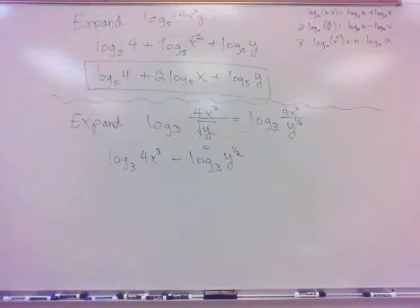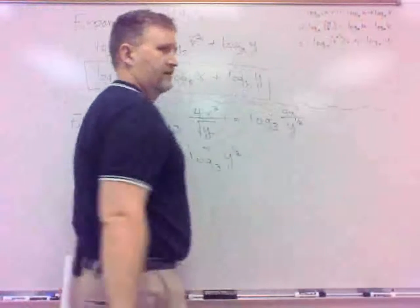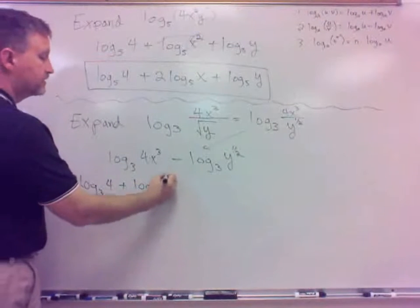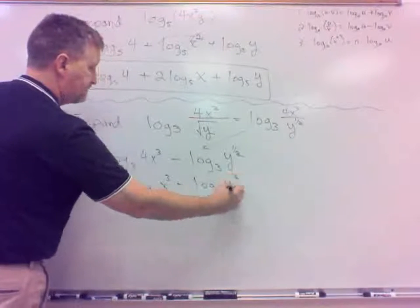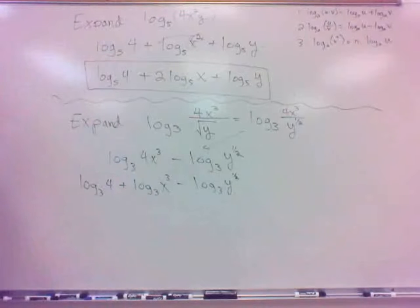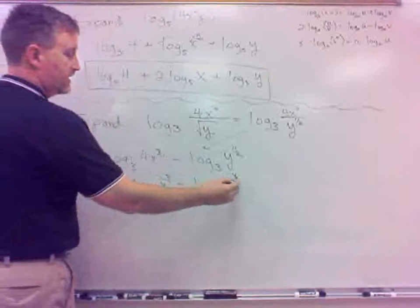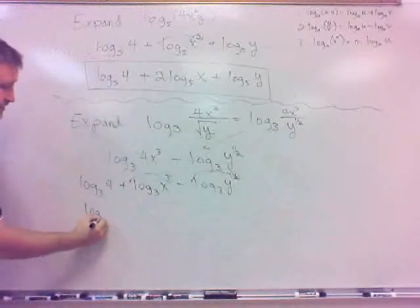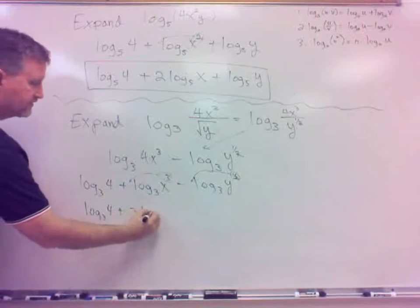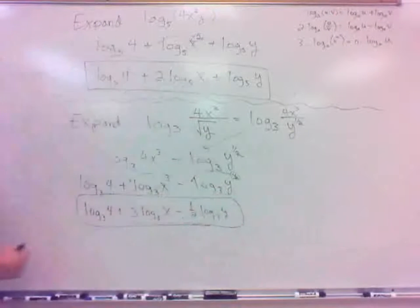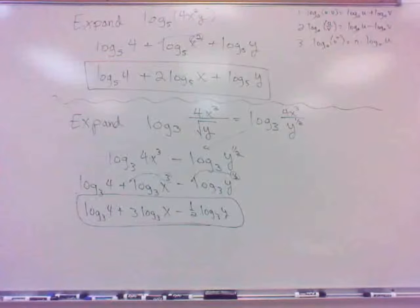But I also have multiplication in the numerator, so I can split that up — multiplication turns into addition of two logs. That gives log base 3 of 4, plus log base 3 of X cubed, minus log base 3 of Y to the one-half. Then bringing out the powers: log base 3 of 4, plus 3 log base 3 of X, minus one-half log base 3 of Y. That is the complete expansion.